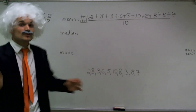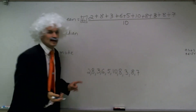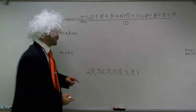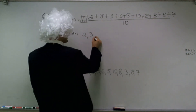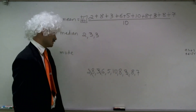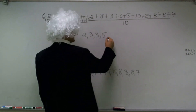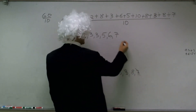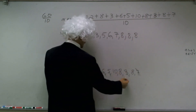Now to find the median, there's a really important thing we need to do: make sure these are all ordered from least to greatest — or greatest to least, it doesn't really matter, but let's just do least to greatest. So we have 2, 3, there's another 3, and something really helpful is to cross them off after you've listed them. Then the next ones are 5, 6, 7, 8, and 8, and there's another 8, and then 10.